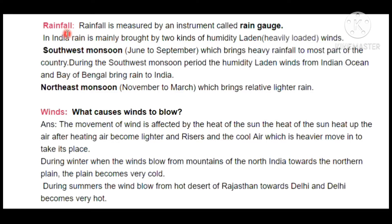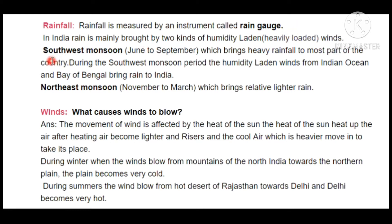Next is rainfall. Just as the hygrometer is used to measure humidity, rainfall is measured using an instrument called the rain gauge. You can search on YouTube how to make your own rain gauge. In India, rain is mostly brought by two types of humidity-laden winds — winds that carry a very large amount of water vapor. When such winds arrive from a particular area, because they carry so much water vapor, the chances of rainfall are very high.